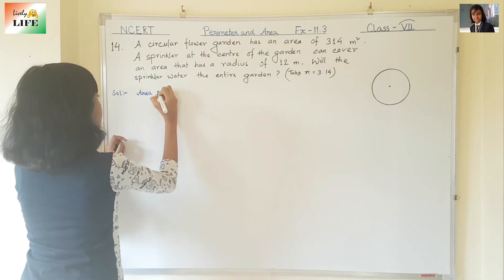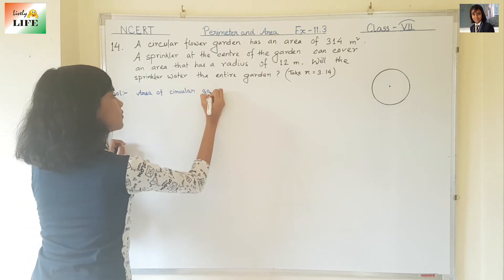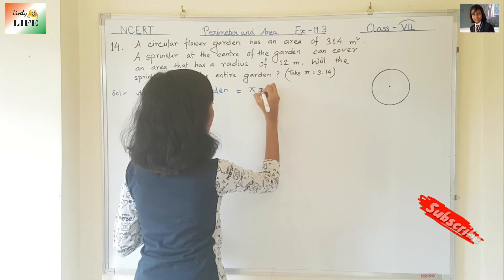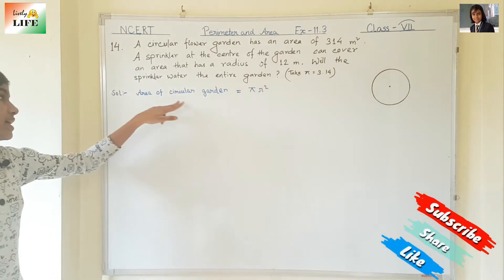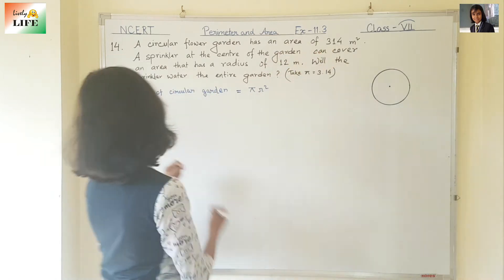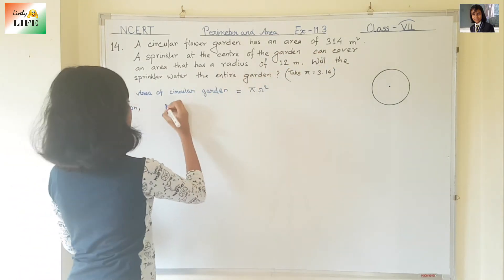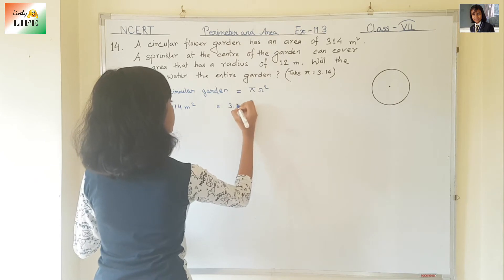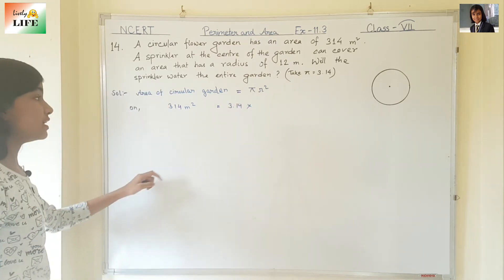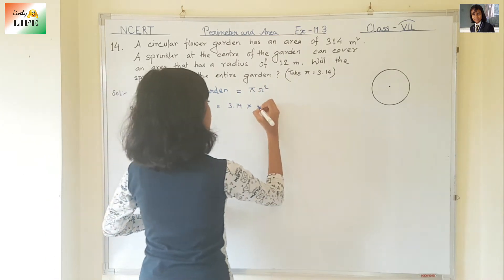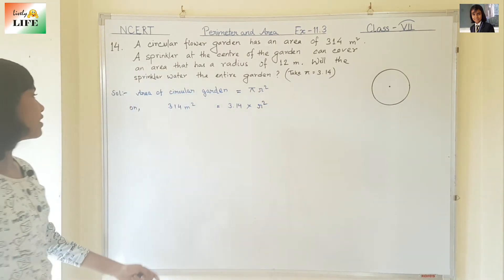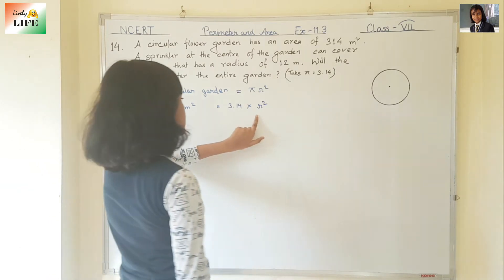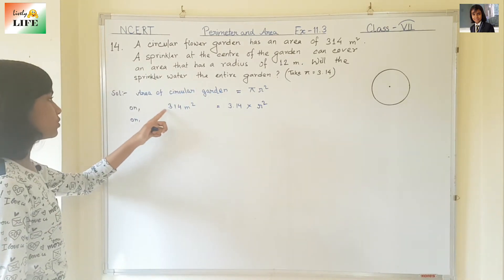First, area of circular garden equals pi r square. What is the area of the circular garden? It is 314 meter square. So instead of area of circular garden, we can write 314 meter square. Pi means 3.14. So, 3.14 into r square is equal to 314 meter square.